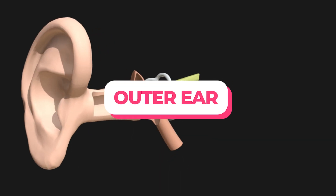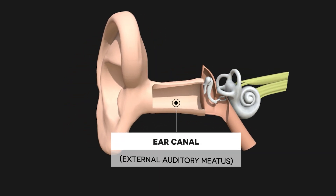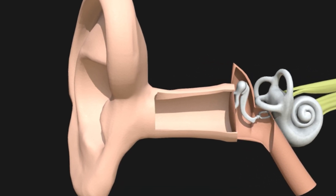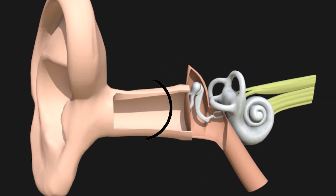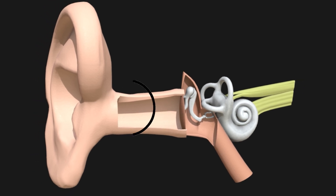The outer ear consists of two key structures. The pinna, or auricle, is the visible part of the ear on the outside of the head, made of cartilage and skin, shaped to capture sound waves and funnel them into the ear canal. The ear canal, or external auditory meatus, is a tube-like structure that leads from the pinna to the eardrum, further directing sound waves toward it.